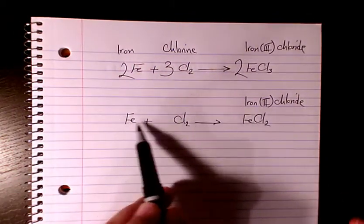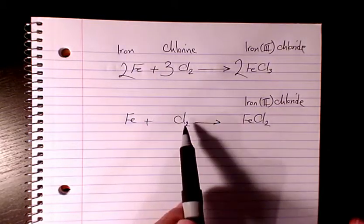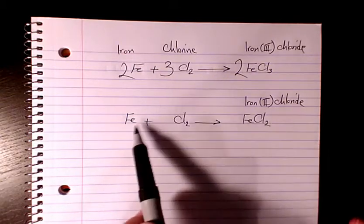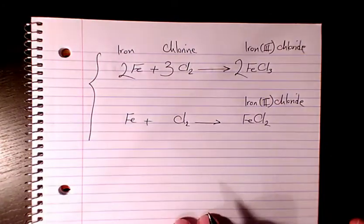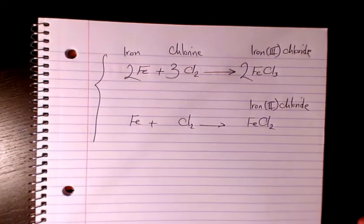Second one we have Fe plus Cl2, it's going to give you FeCl2. So this one is balanced already, why? Because the number of atoms of chlorine here is the same as this side, same as Fe. So that's how we balance these two kinds of chemical equations.